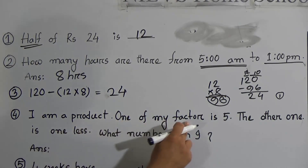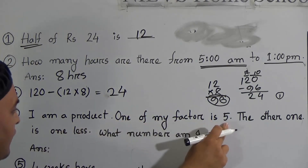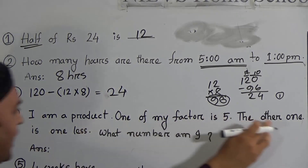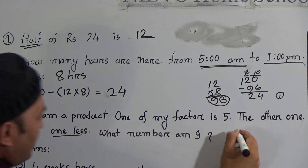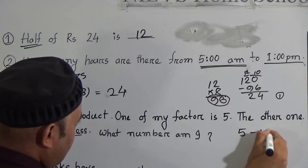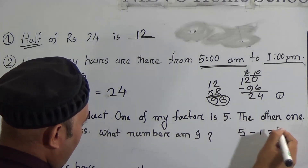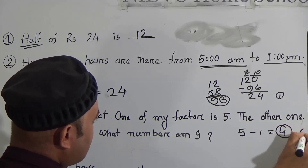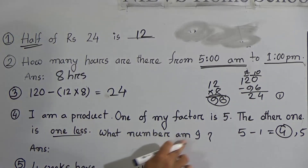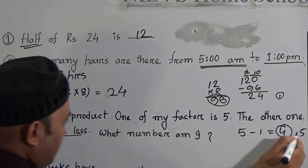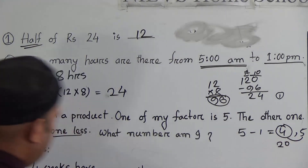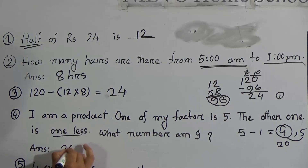Next: I am a product, one of my factors is 5, and the other one is 1 less than 5. That means 5 minus 1 equals 4, so the other factor is 4. Given factors are 5 and 4, what is the product? 5 times 4 equals 20. The answer is 20.